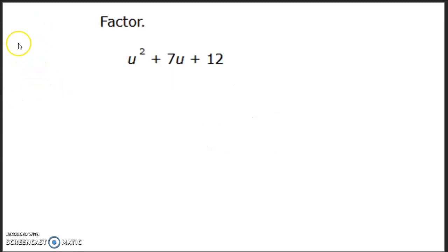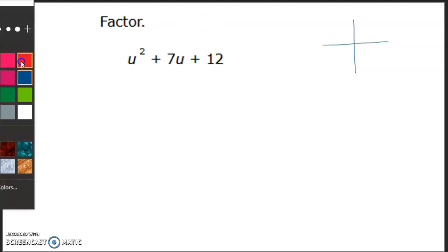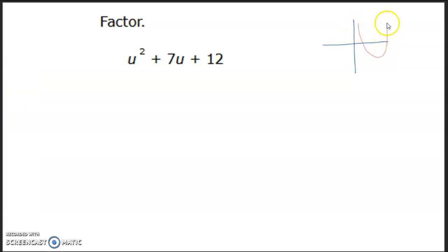So what something means to be a factor is when we graph this, for example, this is my graph. When you graph this it's gonna look like a parabola, right? So it could be something like this and then we're trying to find where our x values are, where it crosses. This is what we're trying to find, okay?